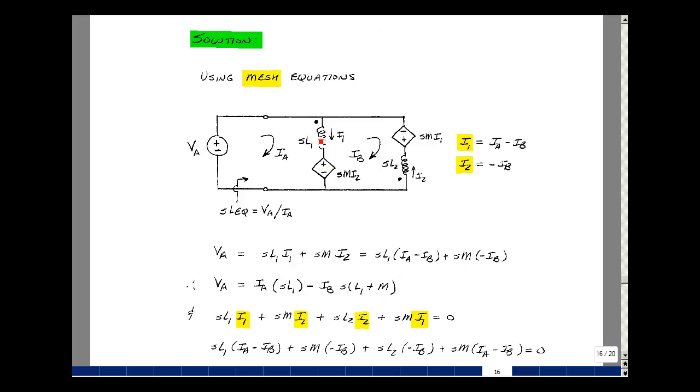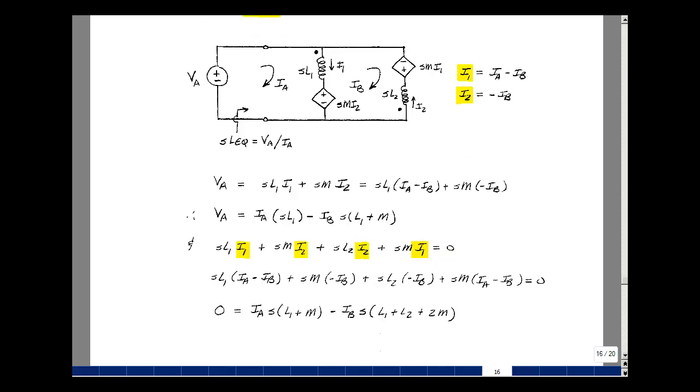So here we've got SL1 times I sub A, and then I sub B has a minus sign and then SL1 and SM. So we've got these two added together and then a minus sign. Let's go around this loop counterclockwise. So I have a drop of SL1 I1, a drop of SMI2, a drop of SL2 times I2, and then a drop of SMI1. So it just drops around the loop, no rises. So we'll just set that equal to zero. So again, let's tune in the value for I1 and I2. I1 is IA minus I sub B, so here and here. And then I2 is minus I sub B.